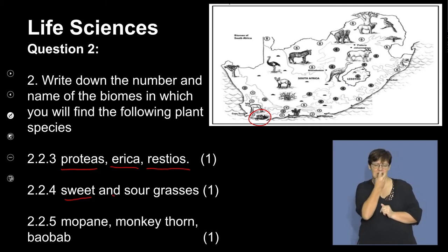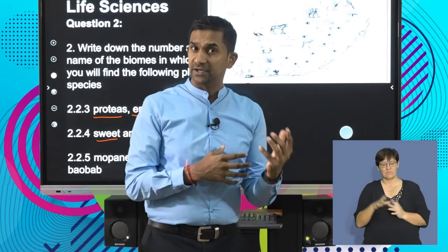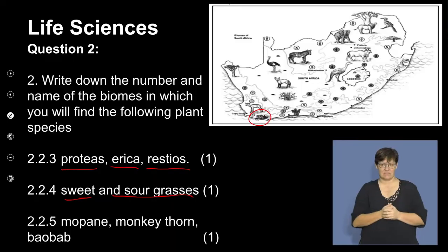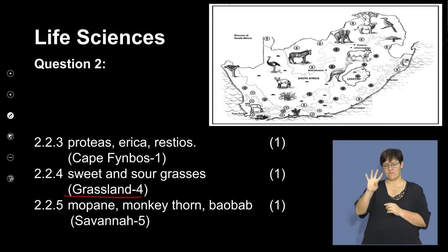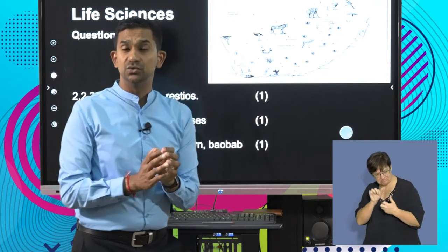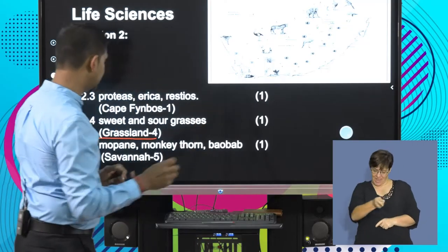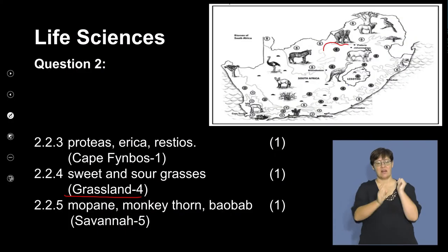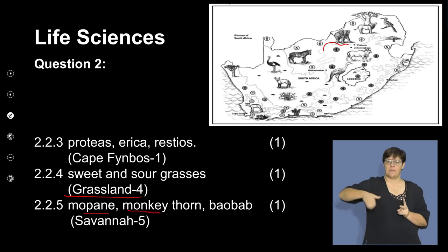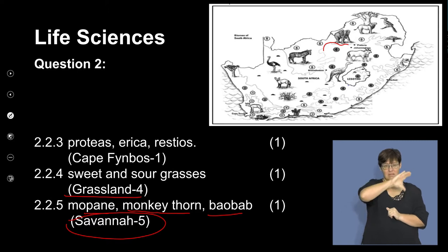Sweet and sour grasses are found in areas with a predominance of unique grass types — that's in your grassland, area number 4. These areas have predominantly sweet or sour grass, which attracts certain herbivores that prefer that. Finally, plants such as the mopane, monkey thorn tree, and baobabs are found predominantly in area number 5 — the savannah. Here's a beautiful image of a baobab tree found in that location.